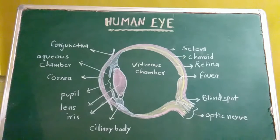Eyeballs are situated in the deep bony eye sockets of the skull. Eyeball is a hollow spherical organ about 2.5 cm in diameter and about 6 to 8 grams in weight.